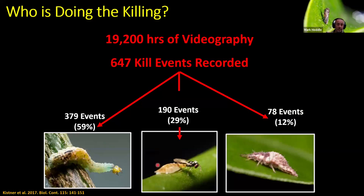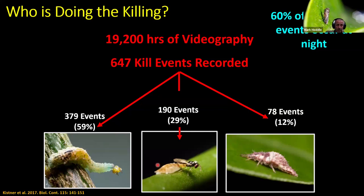What we noticed was that most of the predation occurs at night. Tamarixia radiata shows up at about 11 o'clock in the morning, sticks around until about one o'clock in the afternoon — active for maybe three or four hours at most. The videography also showed us that Argentine ant was always present when there was Asian citrus psyllid, and they would interfere with the natural enemies that came to feed on them.